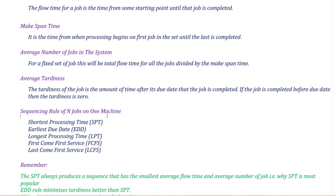Next is First Come, First Service (FCFS): the job that arrives first gets serviced first, the second job second, and so on. Then there is Last Come, First Service (LCFS): the last job to arrive gets serviced first. So, in this case, you can do sequencing.